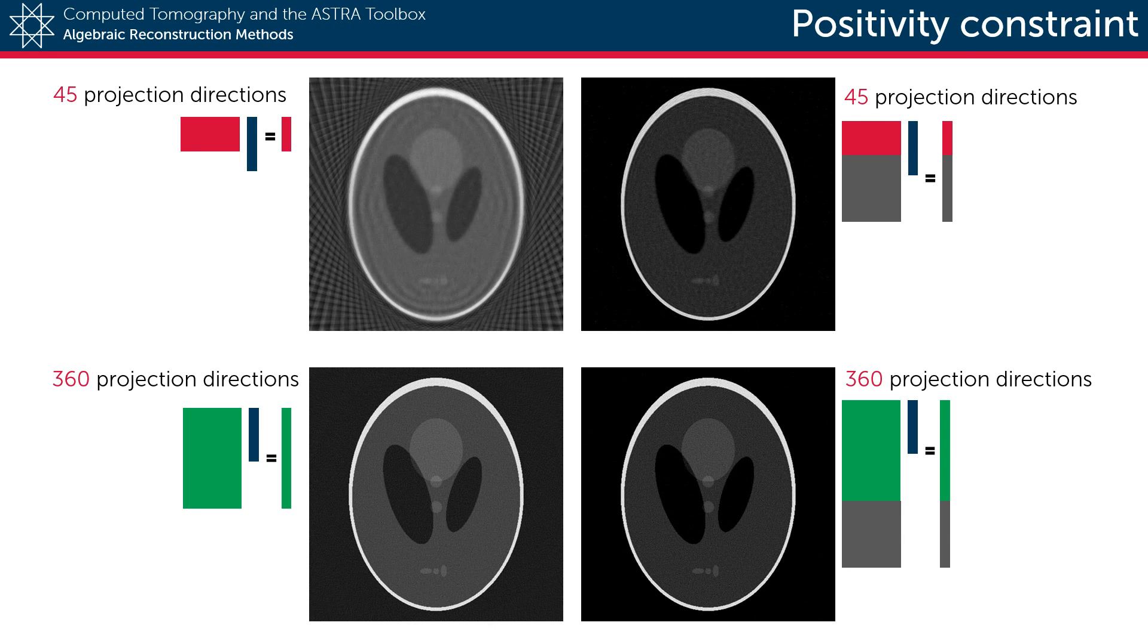If we now do these reconstructions again, but this time with a minimum constraint, we see that for the one with 360 directions, the prior knowledge resulted in little benefit. Whereas for the insufficient data case of having only 45 directions, the benefit is clearly very profound.